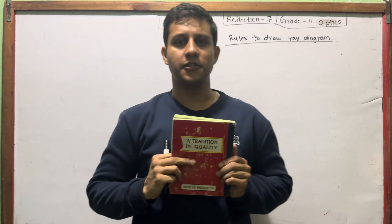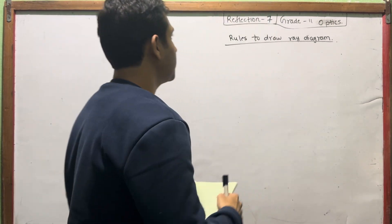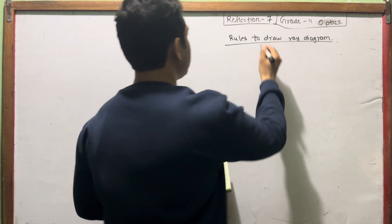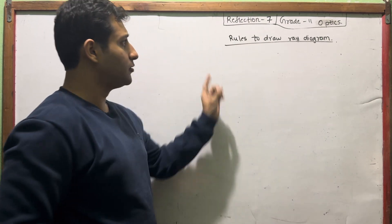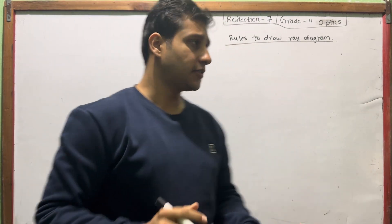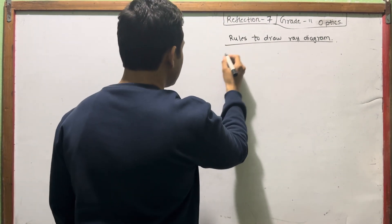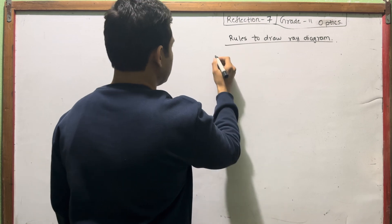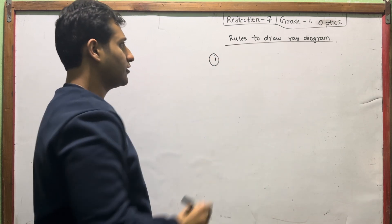Hello everyone, welcome to the class of 11th grade, part 7. We have rules to draw a diagram. So let's start the class. We have three golden rules, and I'm going to write the first rule here.